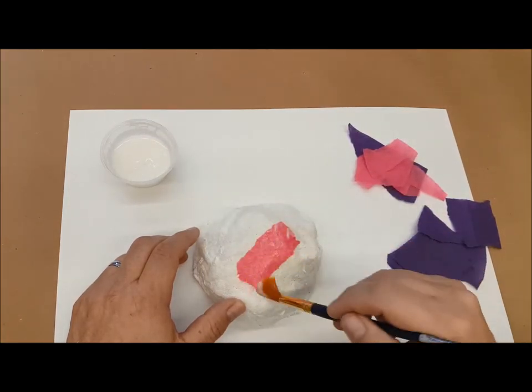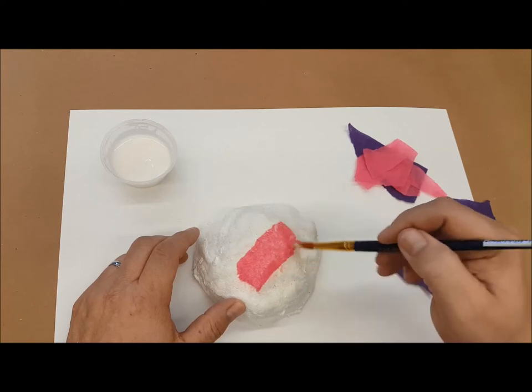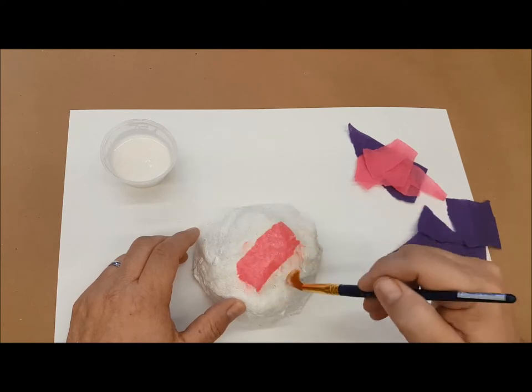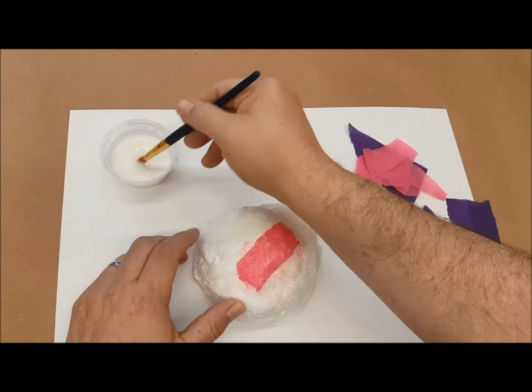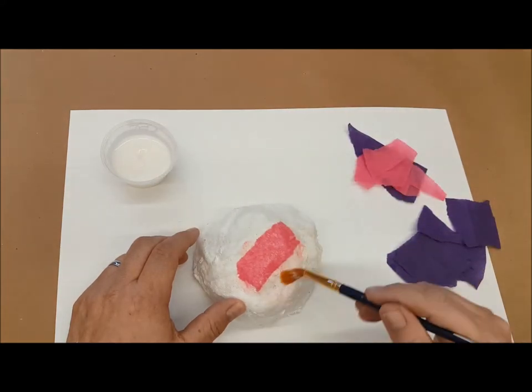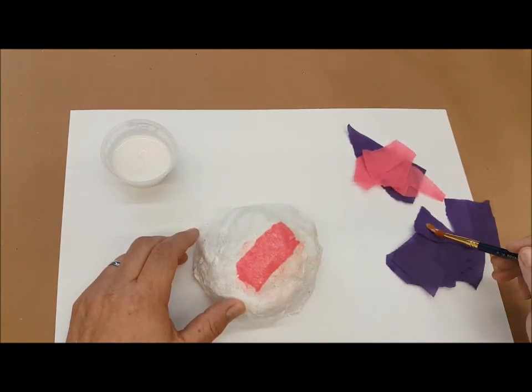I make sure that the paper is adhering all the way down so there's no wrinkles on it. Then I'm going to add some more glue where I want to have another color and these are going to overlap a little bit.